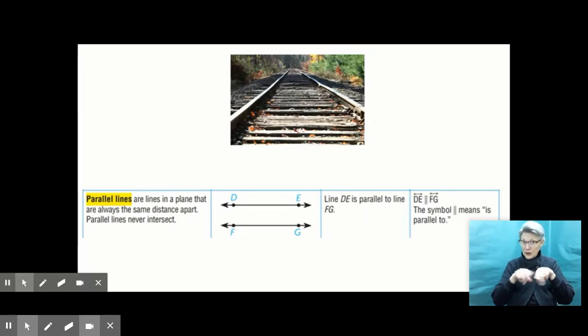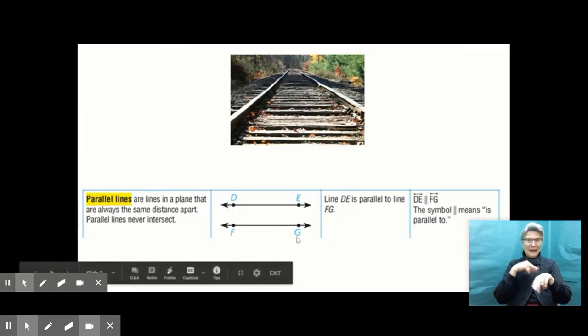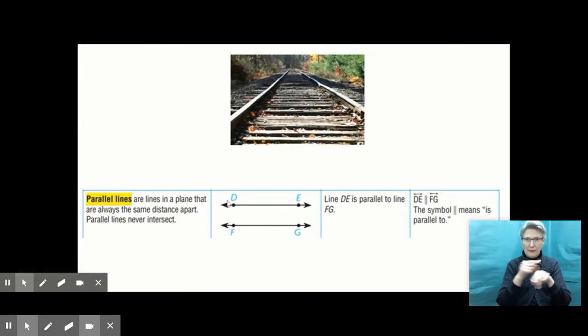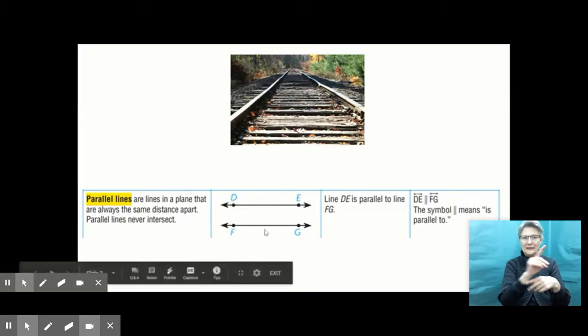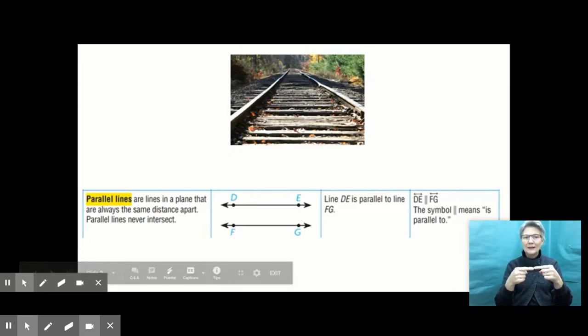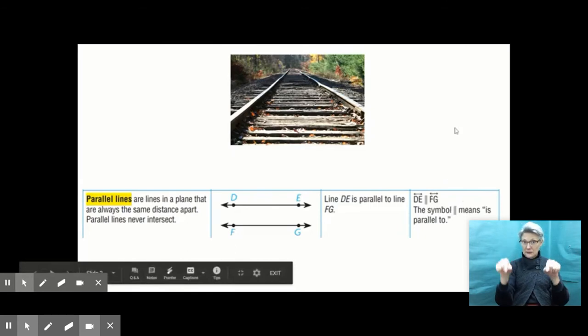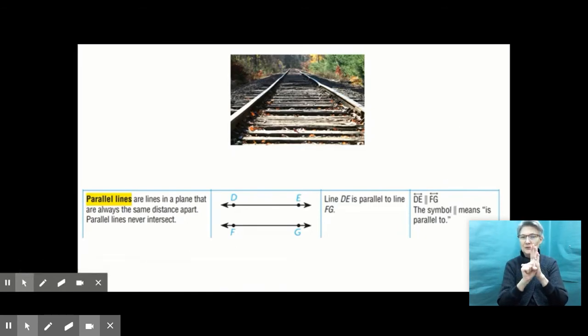A railroad track, they won't intersect. They're parallel because if they did, then the train wouldn't be able to stay on those tracks. So here's an example, a math example of some parallel lines. I see I have line DE and I have line FG. I would say that line DE is parallel to line FG. And then my last box here, these are my mathematical symbols that I use to describe the relationship of these parallel lines. Line DE, we know how to write line DE because we learned that a couple lessons ago. And then those two lines in between, that actually means parallel. That symbol means is parallel to. So line DE is parallel to line FG, and that's how I would write that out.